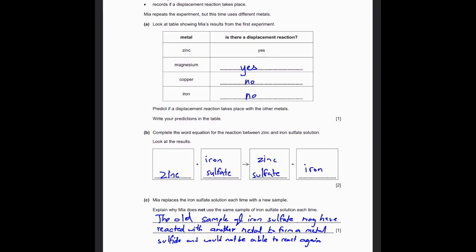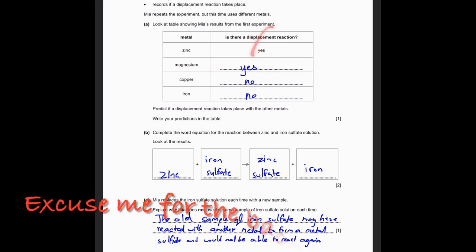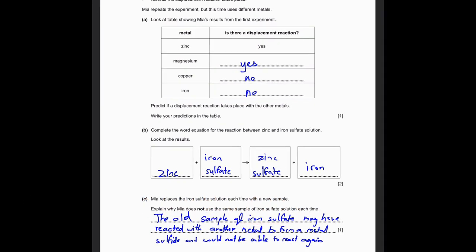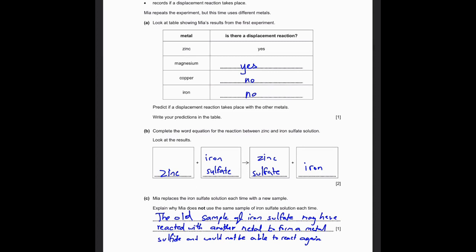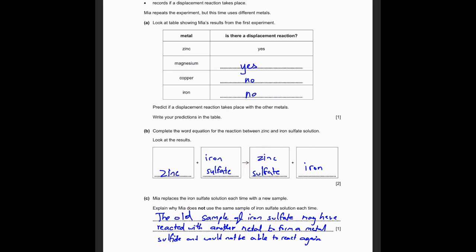Explain why Mia does not use the same sample of iron sulfate solution each time. The old sample of iron sulfate may have already reacted with another metal - for example, after the displacement reaction with zinc, it would no longer be iron sulfate but zinc sulfate. Using that same solution would not give proper results, because reacting magnesium with zinc sulfate is not the intended experiment.